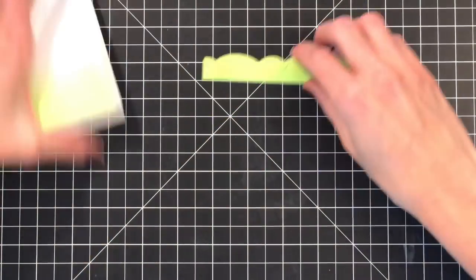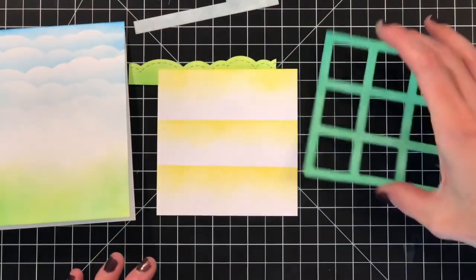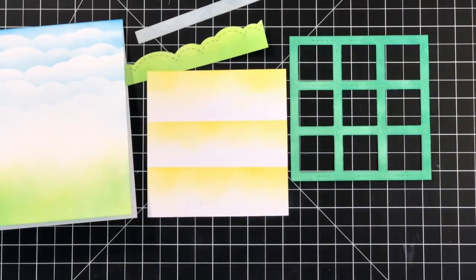So now all my ink blending is done. I'm going to pull out all the pieces here so you can see all the pieces that we ink blended. So those are all complete. Now I'm going to move on to my images.